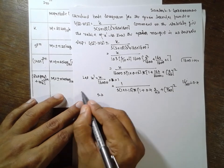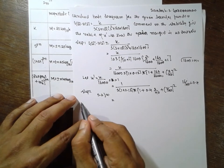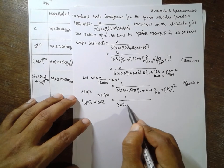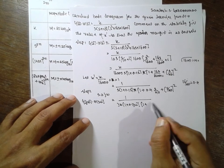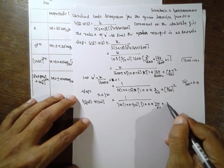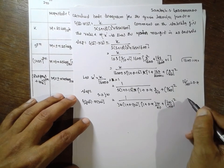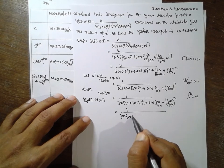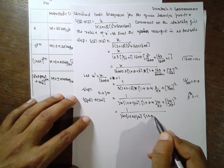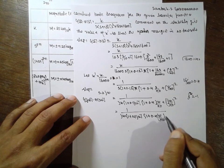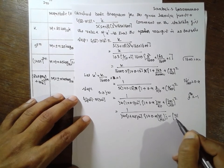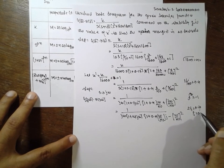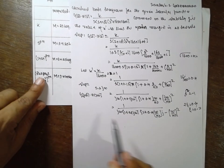Step 2: Replace S by jω. So G(jω)H(jω) = 1 divided by jω times (1 + 0.1jω) times (1 + 0.4jω/40 + (jω/40)²). Now what is jω squared? It is minus 1. Here 2ζ is nothing but 0.4, where ζ is nothing but 0.2, as per this formula by comparison.